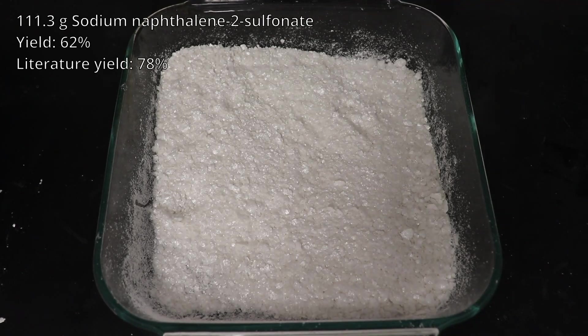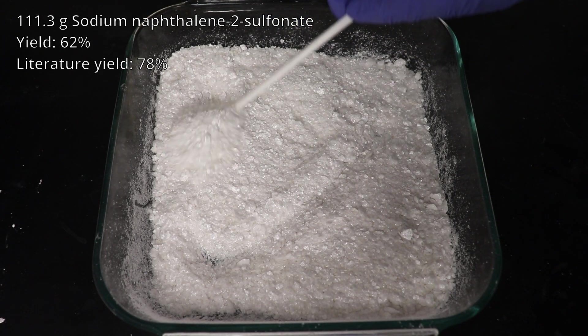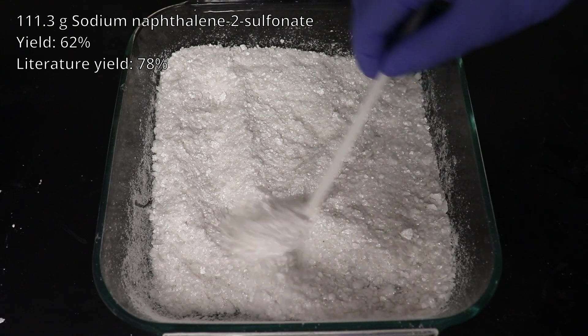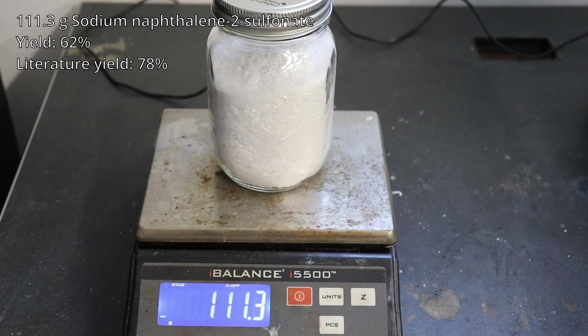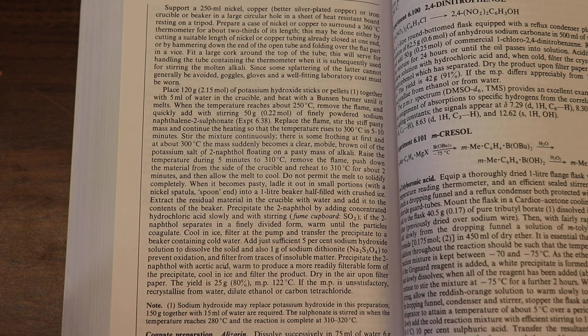111.3 grams of product was obtained corresponding to a 62% yield, which is a bit worse than the procedure from Vogel which got a 78% yield. And now we can get on to making the 2-naphthol by the fusion of the sodium naphthalene 2-sulfonate with alkali.